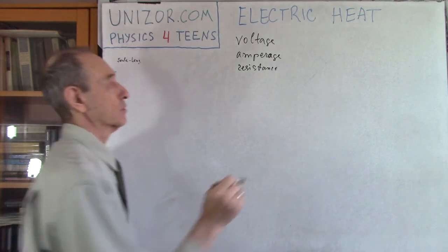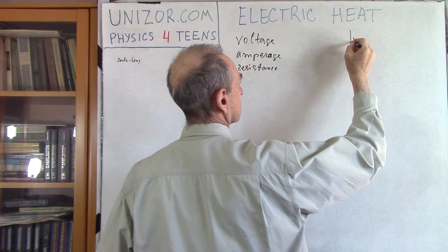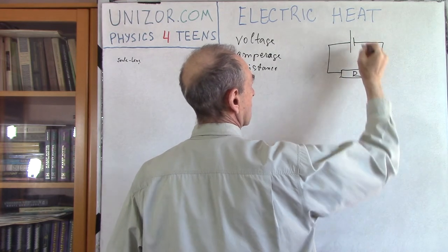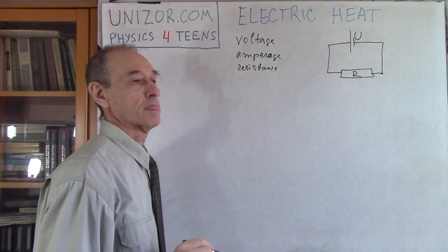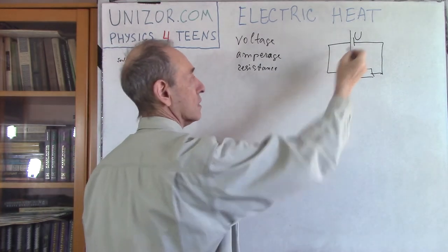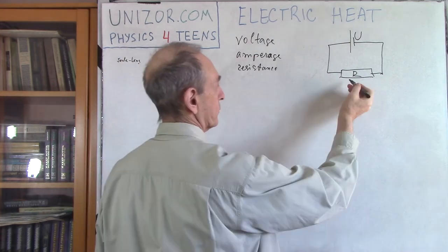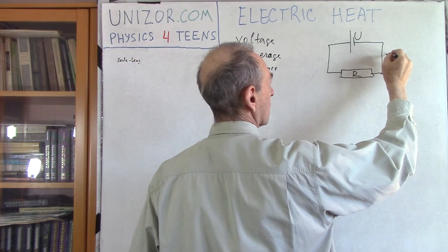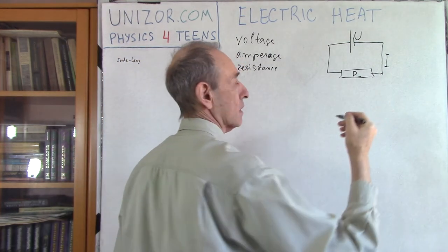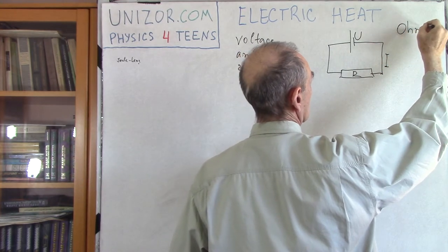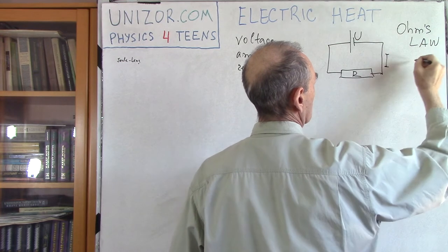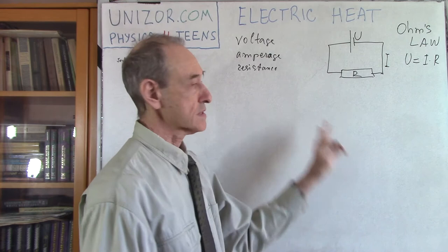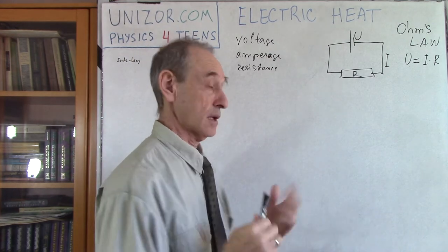Consider a very simple circuit: you have a source of direct current electricity and the only thing you have is a resistor. You know the difference in electric potential between the terminals of the source, which is the voltage U. R is the resistance. Voltage is measured in volts, resistance in ohms, and electric current in amperes. And we have Ohm's Law: U equals I times R.